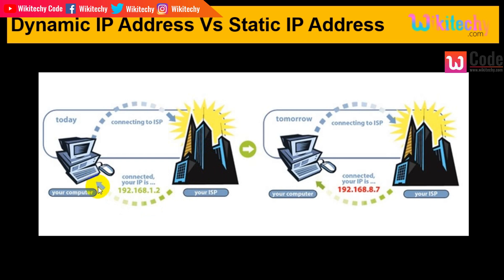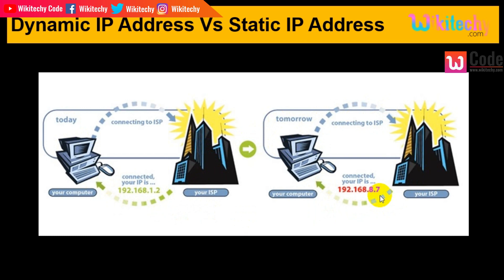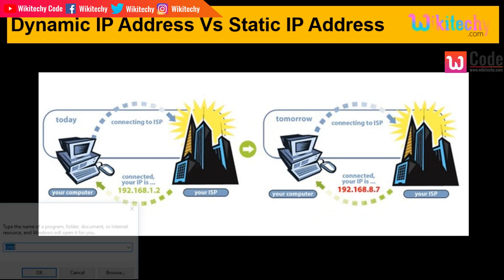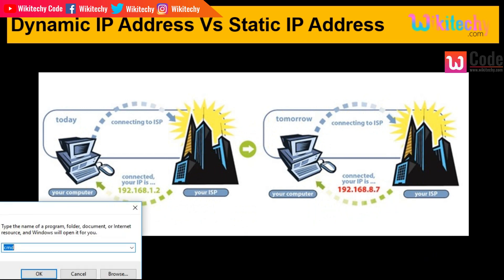I got an IP address here: 192.168.1.2. Next day, I am trying to connect to the computer and I am connecting to the internet. Now I am getting a different IP address. Yesterday it was 1.2 and today it is 8.7. That's where the biggest problem is. So let us see how we can identify the IP address.